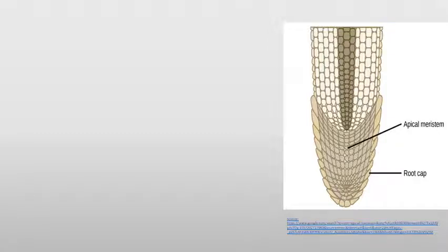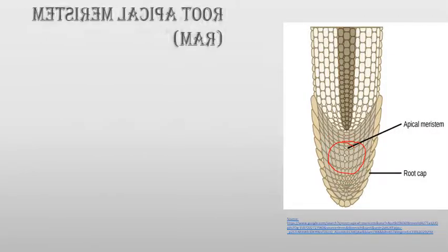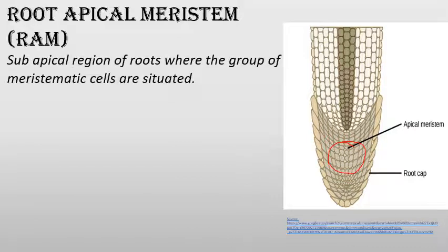The root apical meristem is located in the sub-apical part — the region below the root cap. This group of cells constitutes the root apical meristem, which consists of meristematic cells that have the power of cell division.